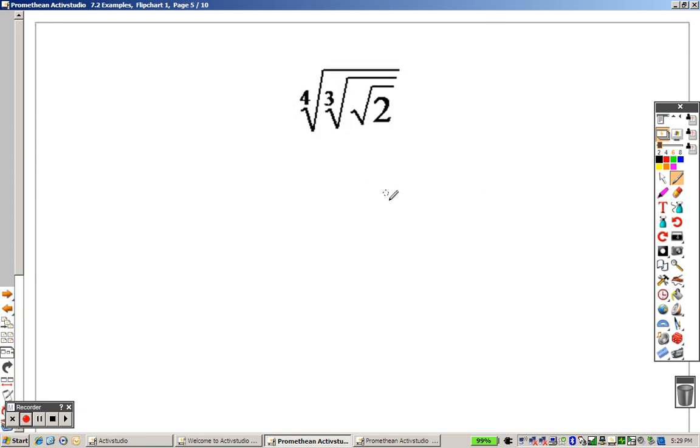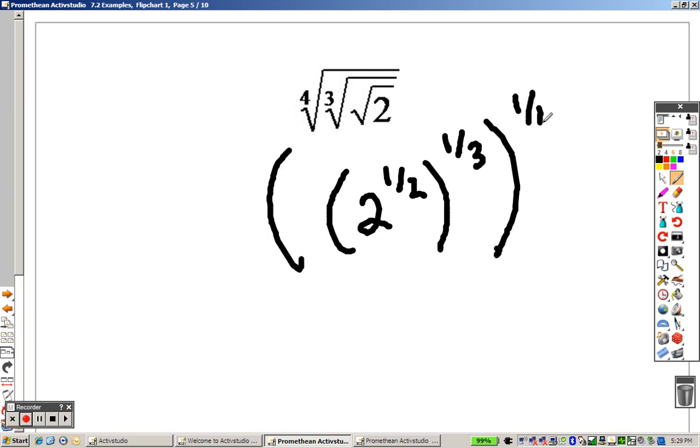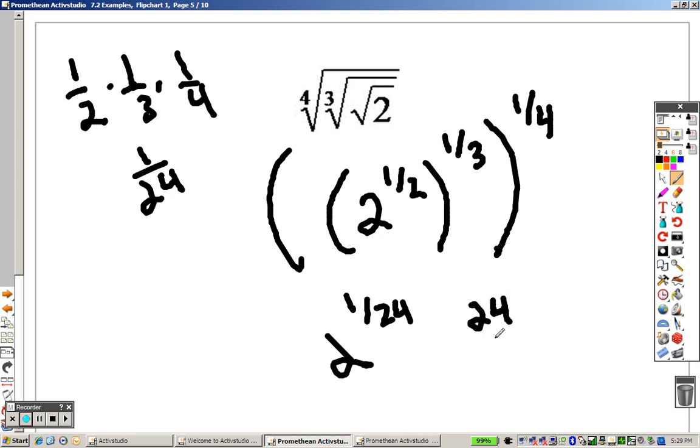With this one, start in and work our way out. 2 to the 1 half, then all of that, the 3rd root is like saying to the 1 3rd. Then, working our way out even farther, the 4th root is like saying to the 1 4th. So it's basically like saying multiply all those. Multiply 1 half by 1 3rd by 1 4th. 2 times 3 is 6, 6 times 4 is 24 with a 1 on top. So it's like saying 2 to the 1 over 24, which is just the 24th root of 2. That's your answer.